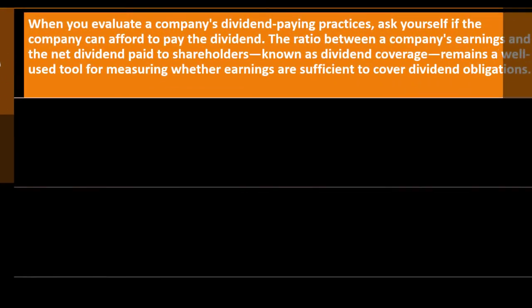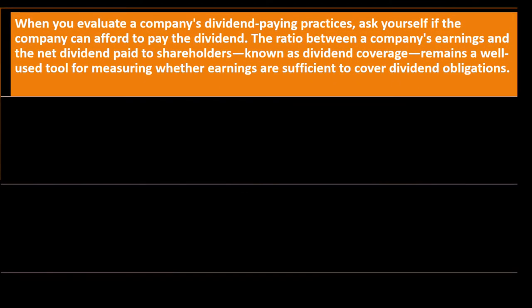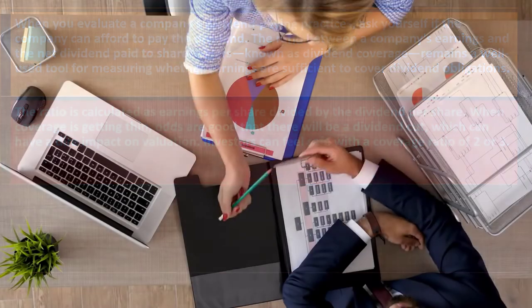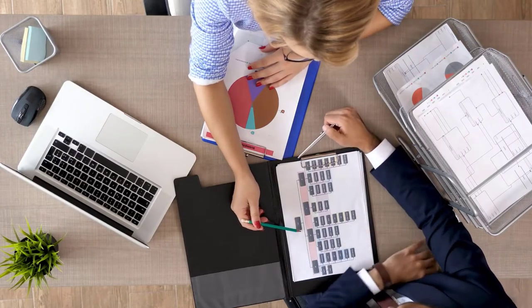When evaluating a company's dividend paying practices, ask yourself if the company can afford to pay the dividend. The ratio between a company's earnings and the net dividend paid to shareholders — known as the dividend coverage ratio — is a well-used tool for measuring whether earnings are sufficient to cover dividend obligations.